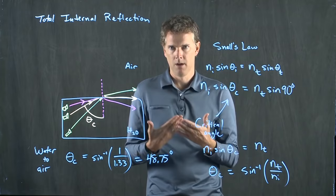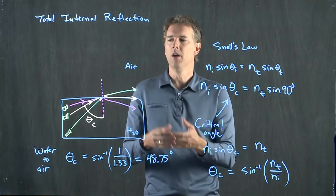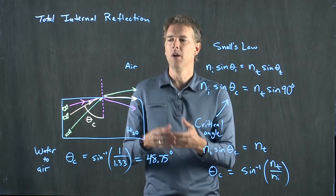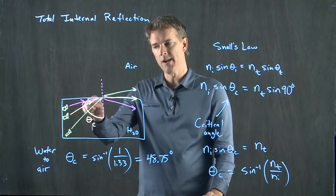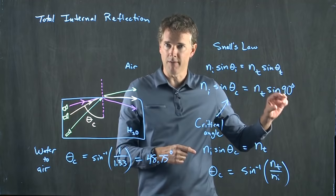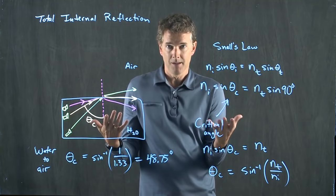Where else do we see total internal reflection? One place is fiber optics — pieces of glass where you want to keep light inside the glass. You come in at a very shallow angle such that when light hits the edge of the glass, it all stays inside and bounces back and forth all the way down the fiber optic length. This is the backbone of the internet — how signals are transmitted right now.